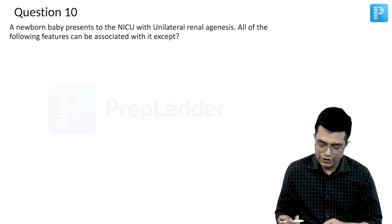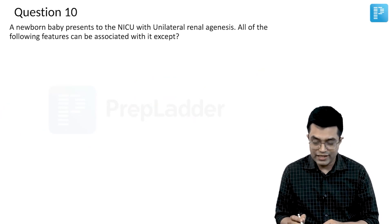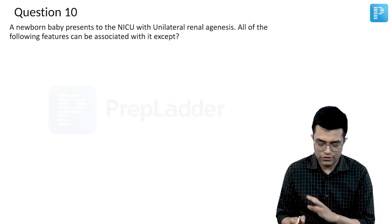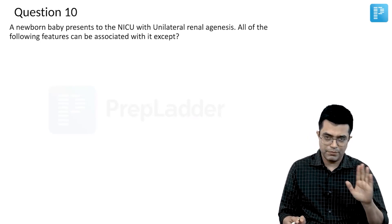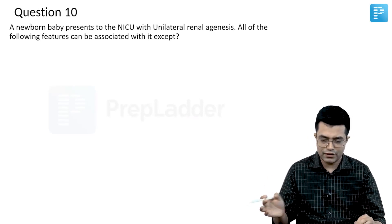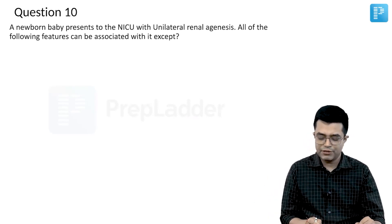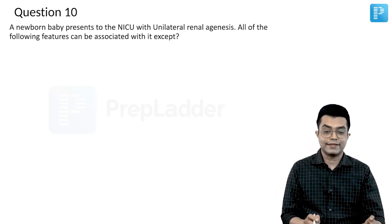A newborn baby presents to the NICU with unilateral renal agenesis — one-sided kidney has not formed. It is compatible with life if the other kidney is normal. All of the following features can be associated with it except...